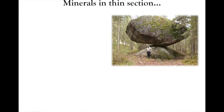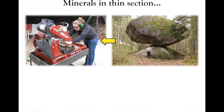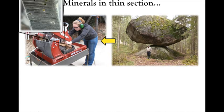To make thin sections, we take a rock sample, cut it into smaller pieces using a special saw with a diamond blade. The blade is made of steel with small industrial-grade diamonds embedded in it — these are not useful for jewelry, but very useful for making saw blades hard enough to cut rock or ceramic. So we cut the rock up into smaller pieces using the diamond saw.